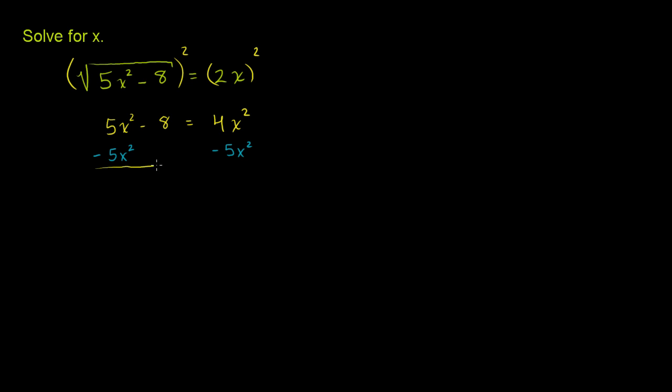The left-hand side, this cancels out. That was the whole point. We're just left with -8 is equal to 4x² - 5x². That's -1x², or we could just write -x².